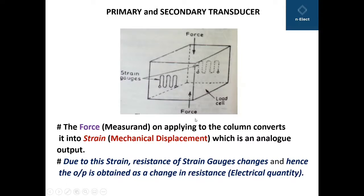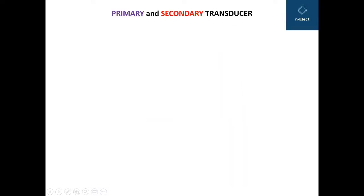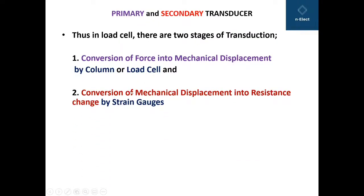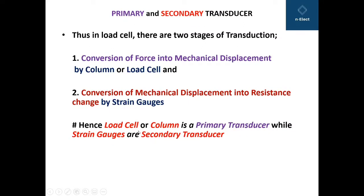In short, the force applied on the vertically opposite faces creates mechanical displacement in the load cell, due to which the strain gauges change their resistance, and the measurement of resistance gives us the measurement of force. Force is converted into mechanical displacement and the mechanical displacement is converted into resistance — a physical quantity converted into an electrical one. Thus in the load cell, there are two stages of transduction: conversion of force into mechanical displacement, done by the column or load cell, and conversion of mechanical displacement into resistance change, done by the strain gauges. Hence, the load cell or column is the primary transducer while the strain gauges are the secondary transducers.